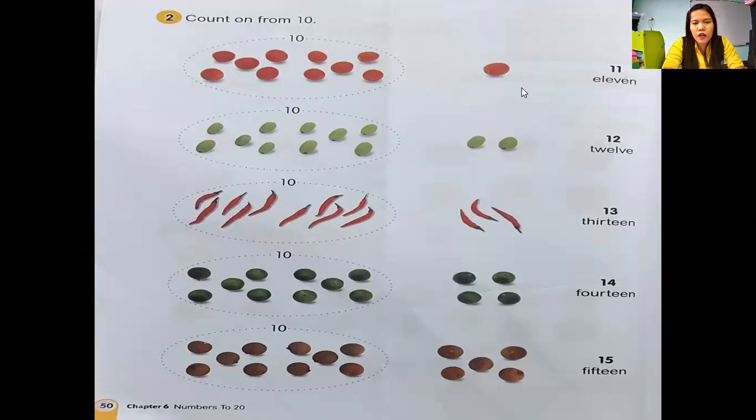Yes, how many fruit? 1, 2, 3, 4, 5, 6, 7, 8, 9, 10, 11. Yes, 10 and 1 make 11. And then the second: 1, 2, 3, 4, 5, 6, 7, 8, 9, 10 plus 2. Yes, 12. Good.